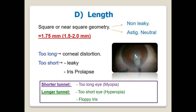Regarding the length of the incision, to get a watertight self-sealing incision, the incision should be square or nearly square shaped — that is, the length of the incision equals its width. This is difficult in large wounds, so for a self-sealing wound, the length of the incision should be 1.75 mm. Avoid tunnels that are too long, as they cause corneal distortion, and avoid tunnels that are too short, as they are leaky and may induce excessive iris prolapse during surgery.